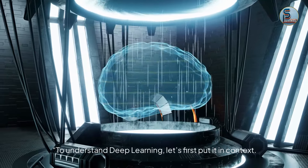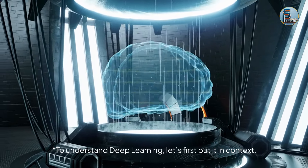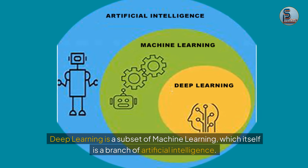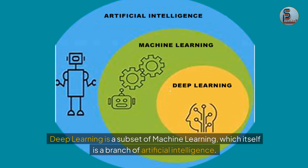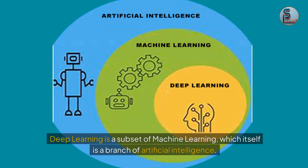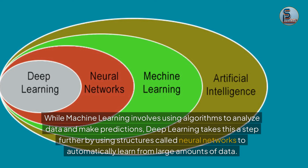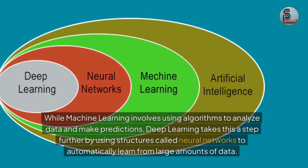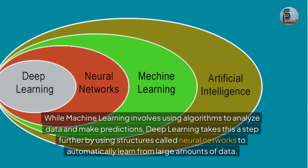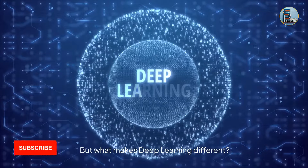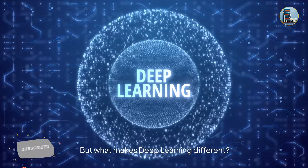To understand deep learning, let's first put it in context. Deep learning is a subset of machine learning, which itself is a branch of artificial intelligence. While machine learning involves using algorithms to analyze data and make predictions, deep learning takes this a step further by using structures called neural networks to automatically learn from large amounts of data.